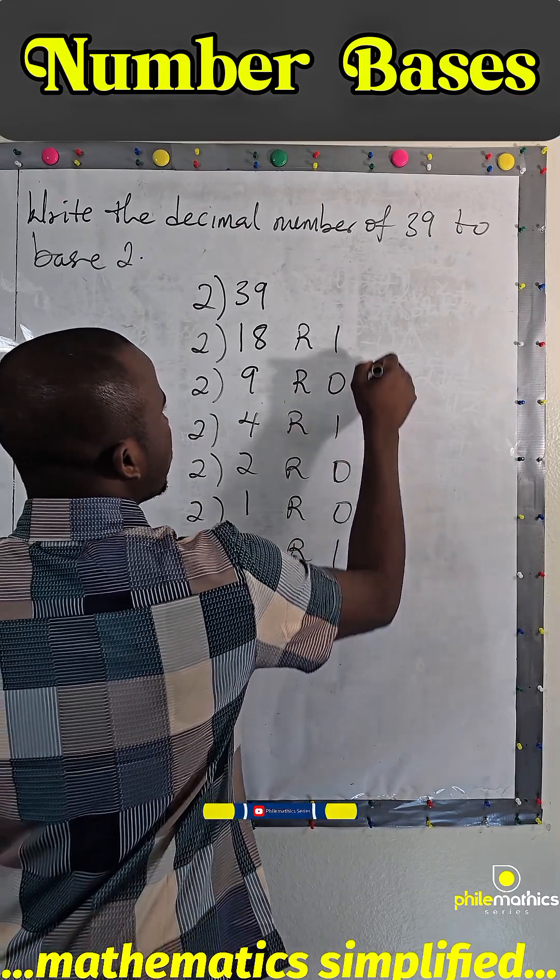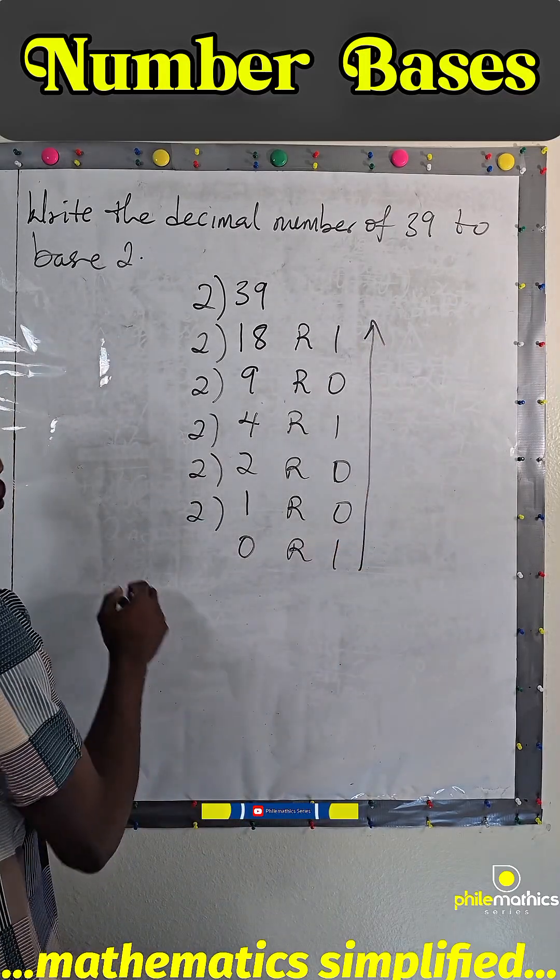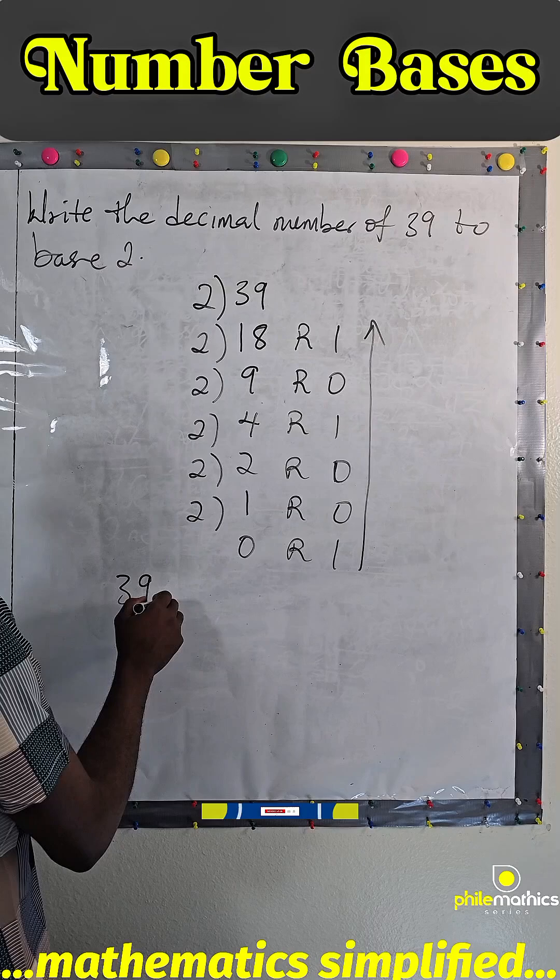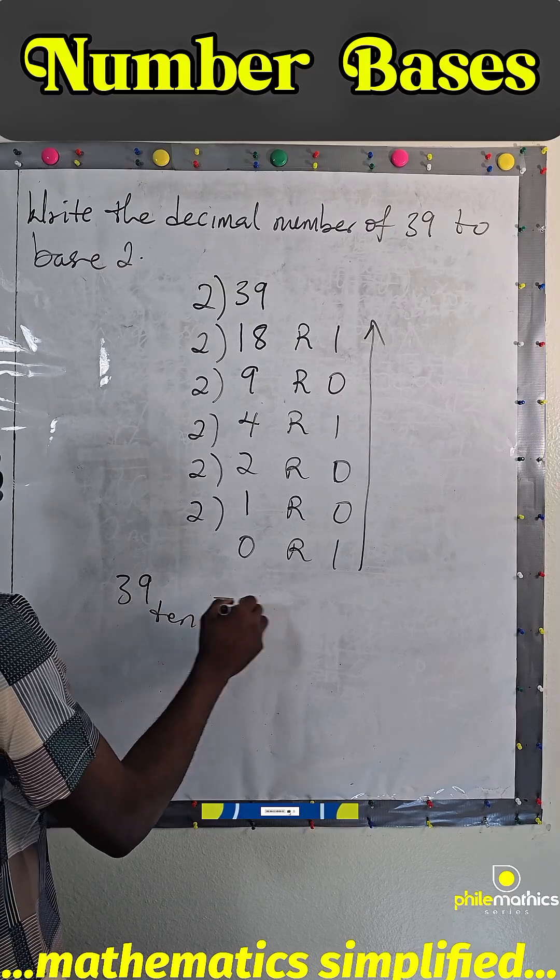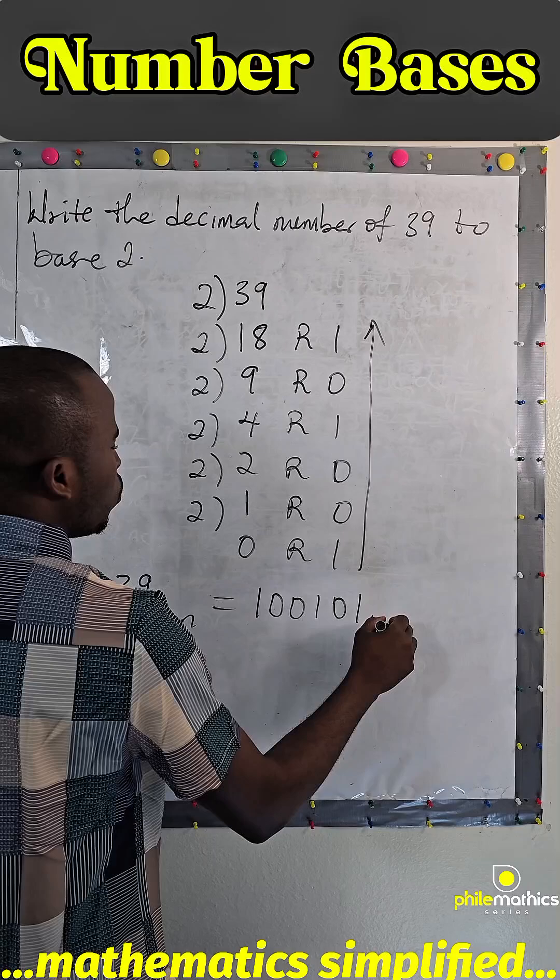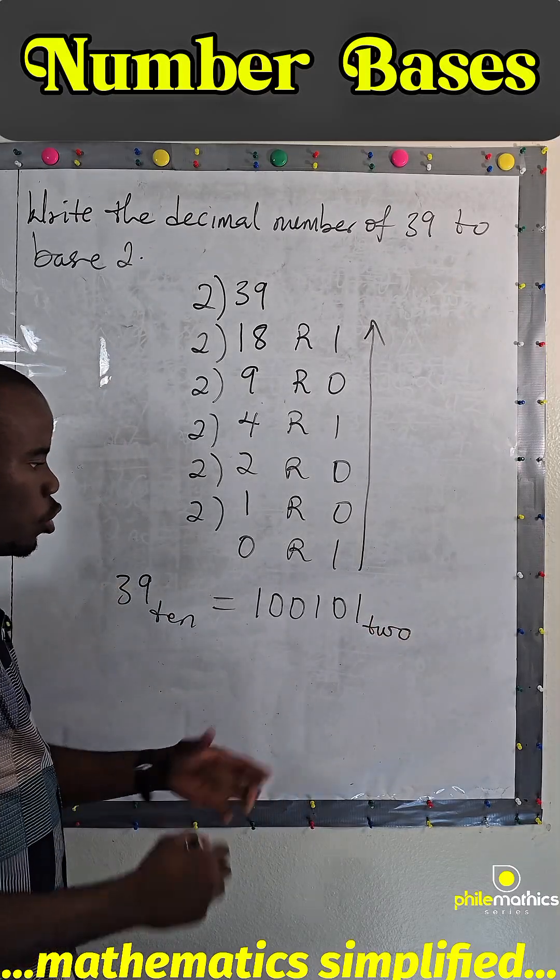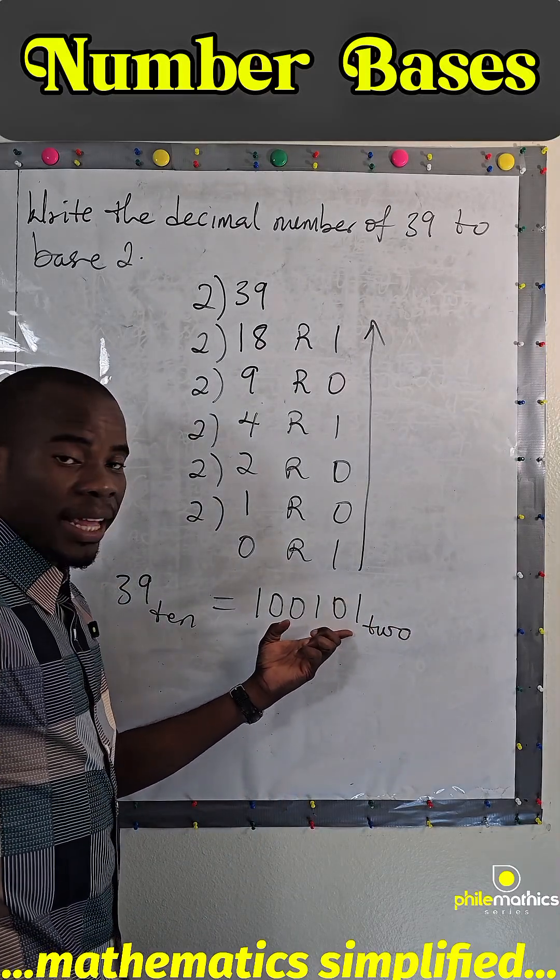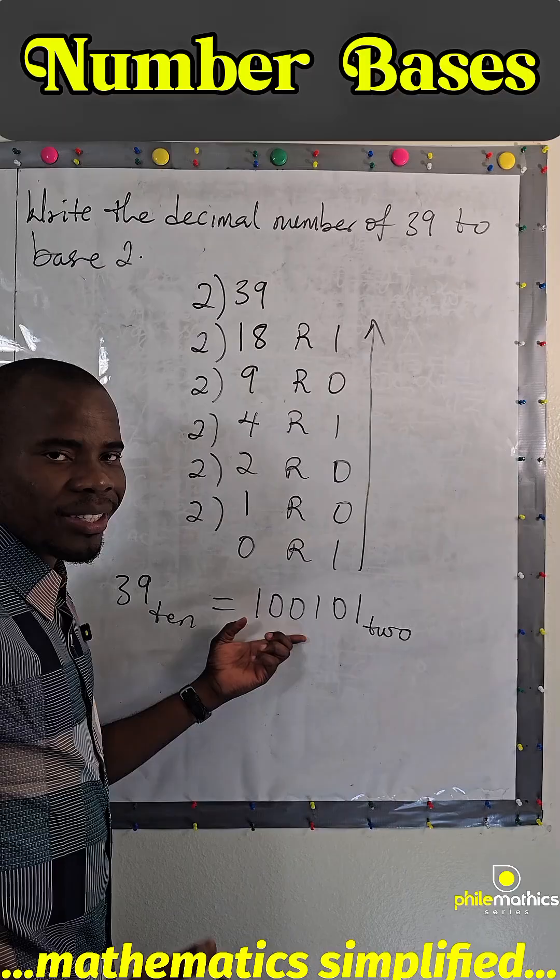And we take this upwards, so that 39 in base 10 is 100101 in base 2. Of course, you don't have to have any number bigger than 1 - that's how you know you are correct.